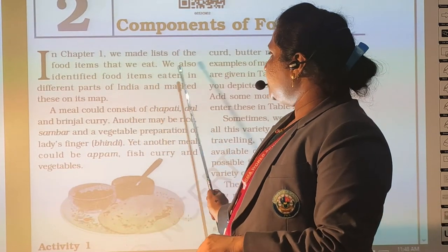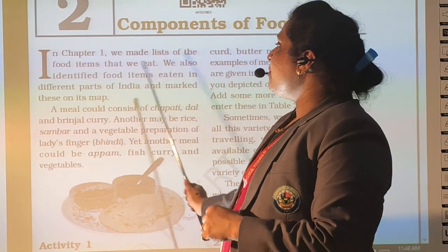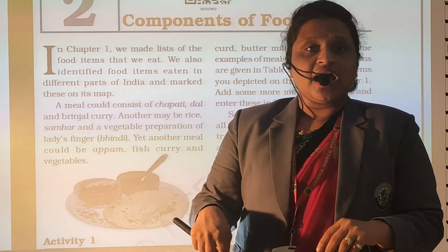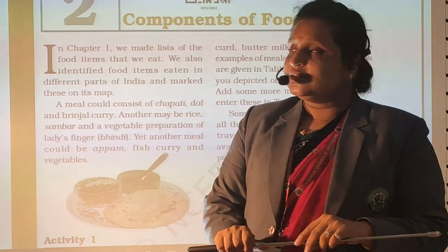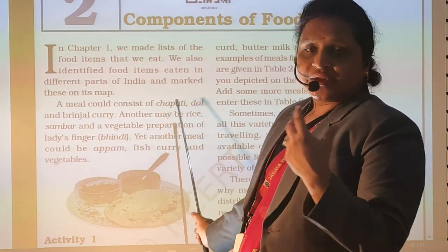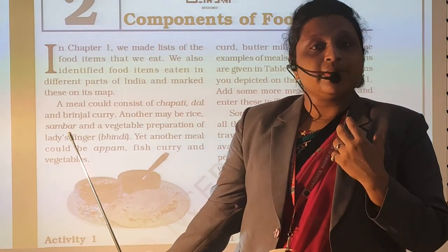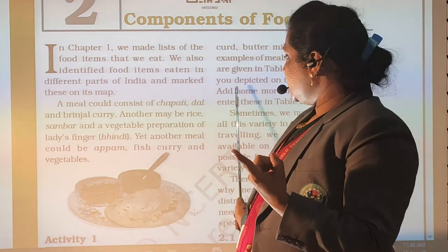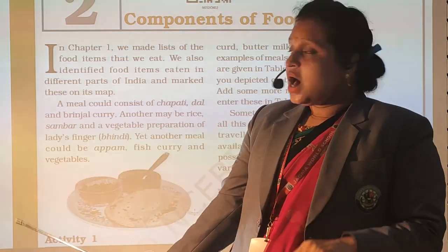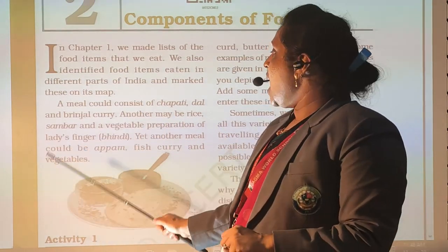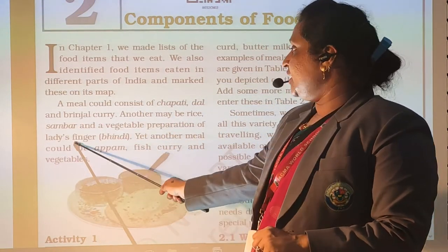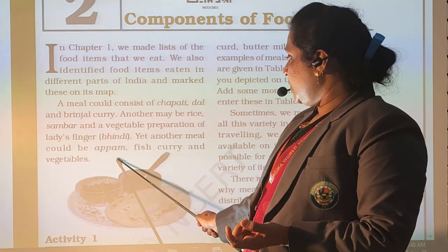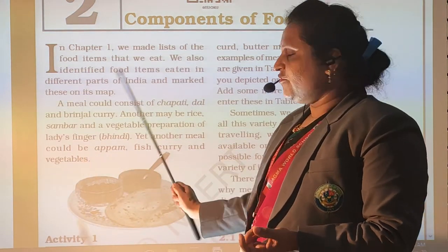We also identified food items eaten in different parts of India and marked them on the map. A meal could consist of chapati, dal, and brinjal curry. Another meal could be rice, sambar, and vegetables prepared with ladyfinger — ladyfinger means bindi. Yet another meal could be upma, fish curry, and vegetables.